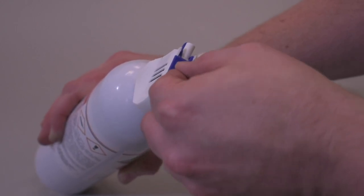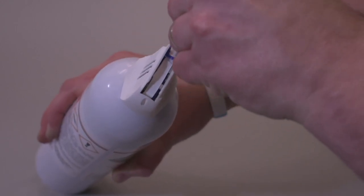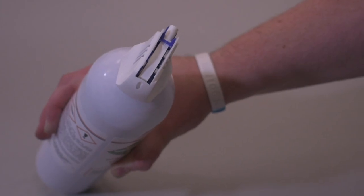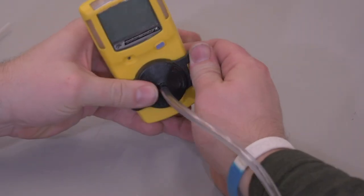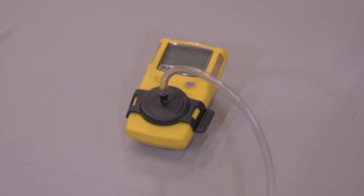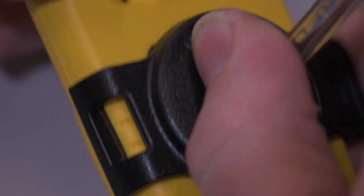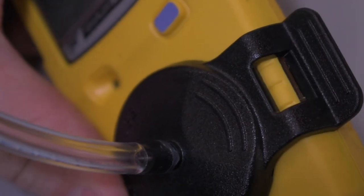First, we'll start by pulling off the safety tab from the top of the trigger housing and make sure our monitor is turned on. Then we'll attach the calibration cap to the front of the monitor. These caps differ between models and manufacturers. Refer to your user manual to make sure yours is secured on correctly.